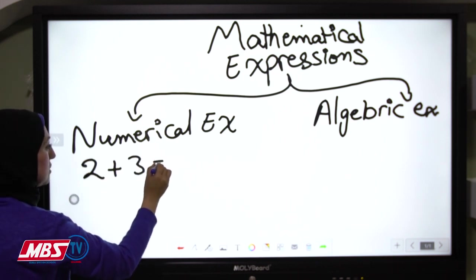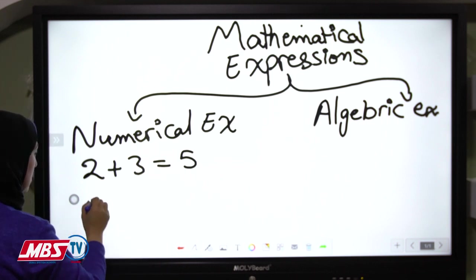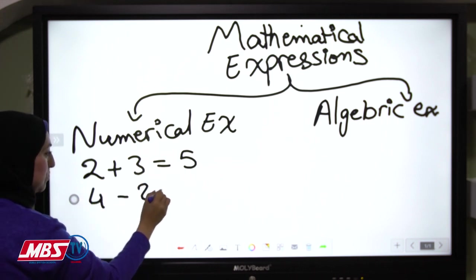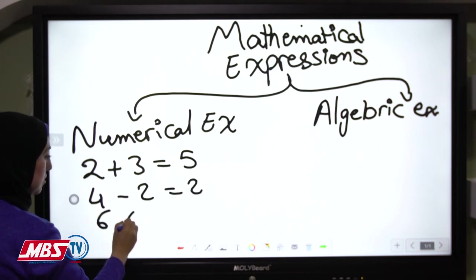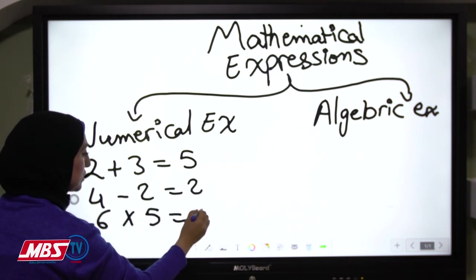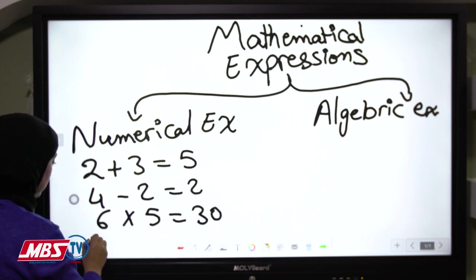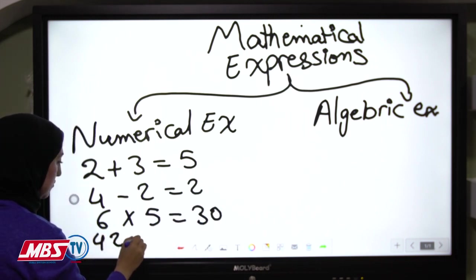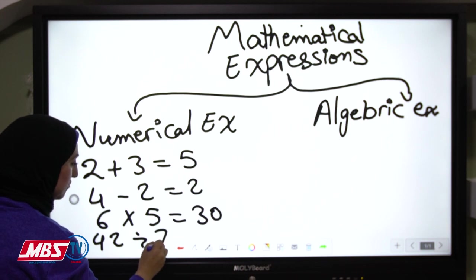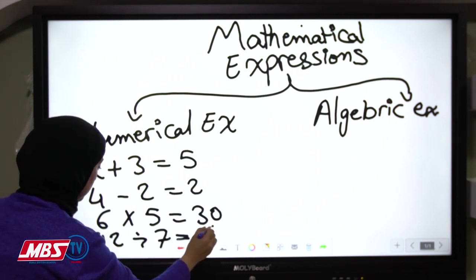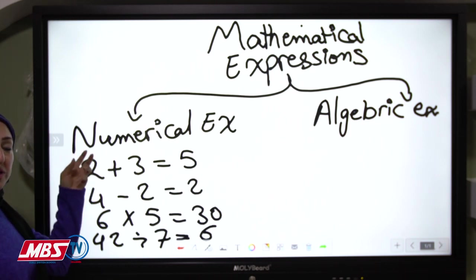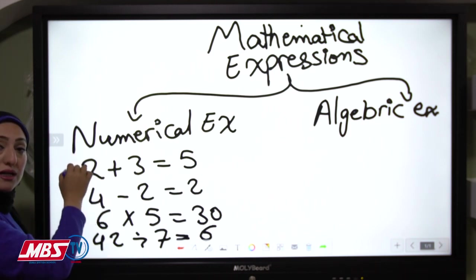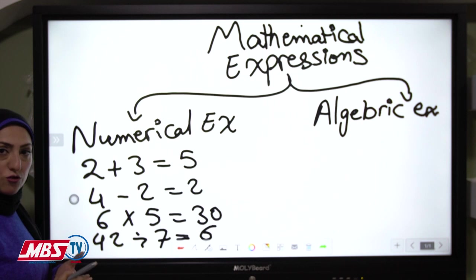For example: 2 plus 3 equals 5, 4 minus 2 equals 2, 6 times 5 equals 30, 42 divided by 7 equals 6. Numerical expressions have only numbers and operations.